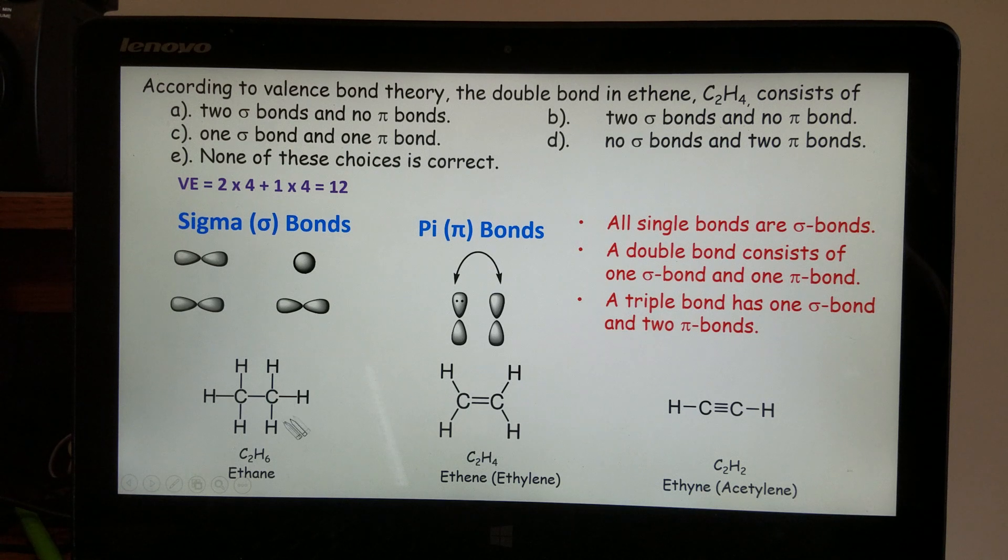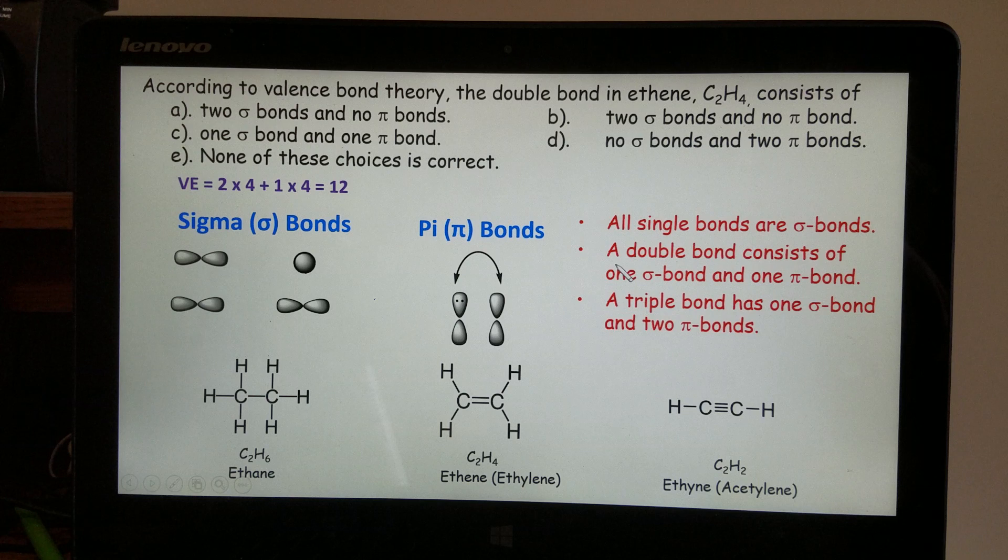How many sigma bonds in this ethane molecule? One, two, three, four, five, six, seven, seven sigma bonds. How many pi bonds? Zero. There's no double bond. You have to have a double bond or triple bond present in order you can have pi bonds.